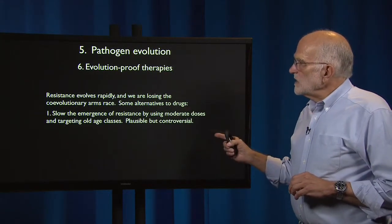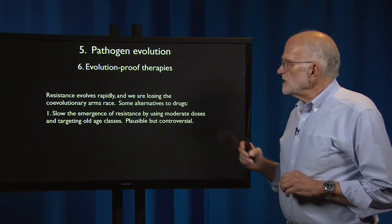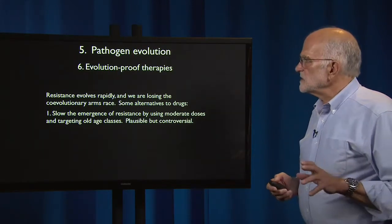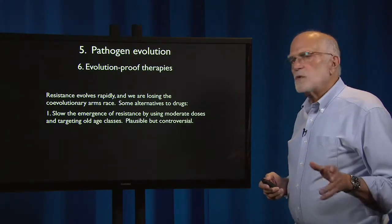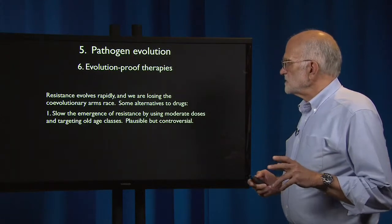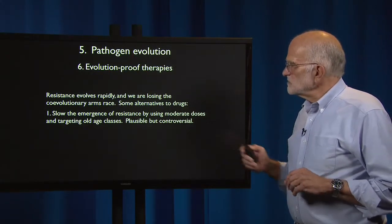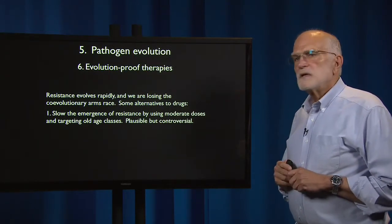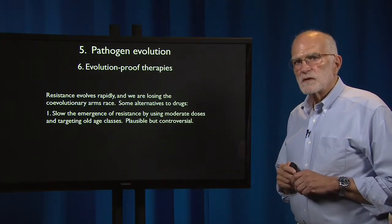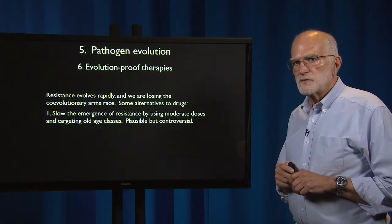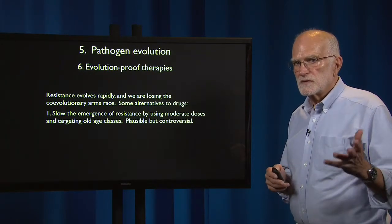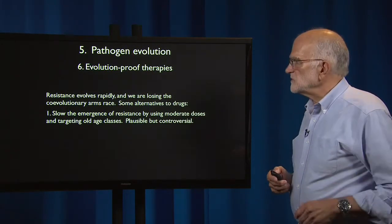One alternative is slowing the emergence of resistance just by using moderate doses and targeting old age classes of pathogens. This is plausible, we think it can work, but it's controversial. Patients naturally want to get a strong dose if they can.